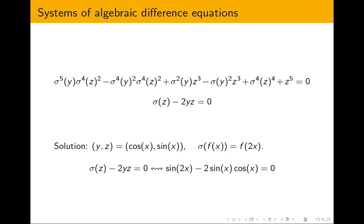Looking at the second equation: you plug in cos(x) for y and sin(x) for z, so sigma(z) becomes sin(2x). This difference polynomial corresponds to a trigonometric identity, which you know is true, so cosine(x) and sine(x) is a solution for the second equation. You can also verify the first equation via a more complicated trigonometric identity.